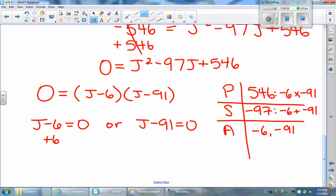I'm going to add 6 to both sides so I can isolate j by itself, and I'm left with j is equal to 6. Or I can add 91 to both sides in this equation, and I'm left with j is equal to 91.